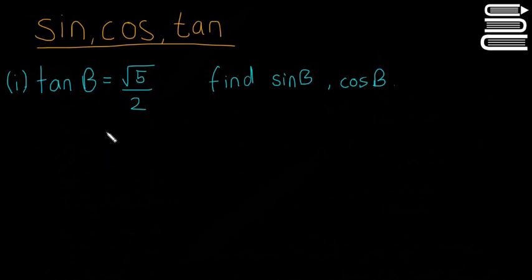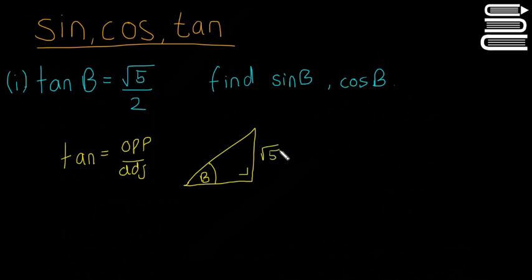This one's a little bit harder. It's not immediately obvious what we have to do, but if you remember that tan is equal to opposite over adjacent, that means we have some right-angled triangle somewhere where this is our angle β. The opposite side is the square root of 5, and the adjacent side is 2. We're going to be able to find this, we'll call it x, by using Pythagoras.